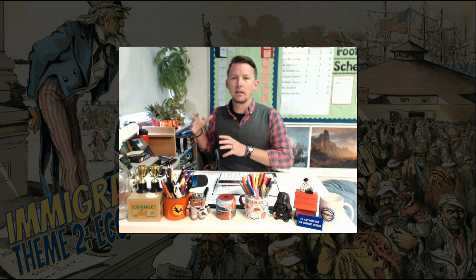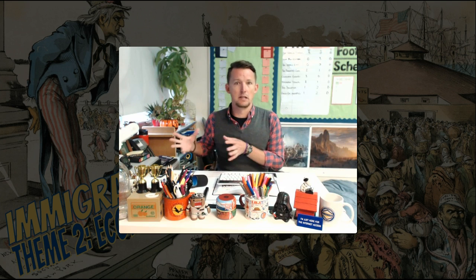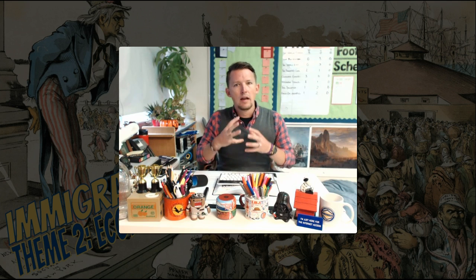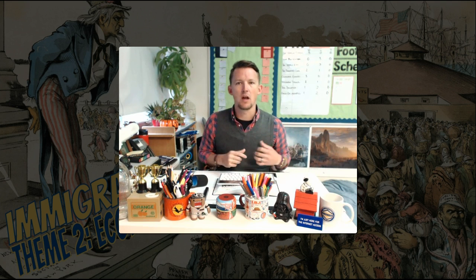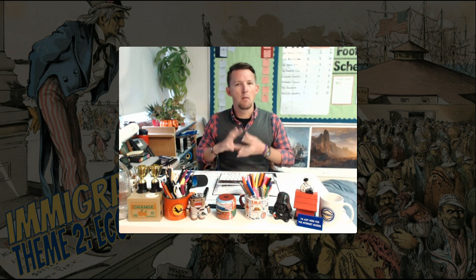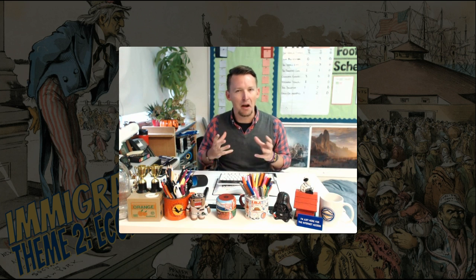Welcome to the first video of theme number two: economic transformations. Over the course of this theme we're going to talk about everything from how America went from being an agrarian society — where we grew our own crops and made our own food — all the way to the economic superpower that we are today. At its core, this unit is really about immigration, and the first video is about how America became this melting pot of many different races, cultures, and belief systems all melted together into one identifiable American culture.